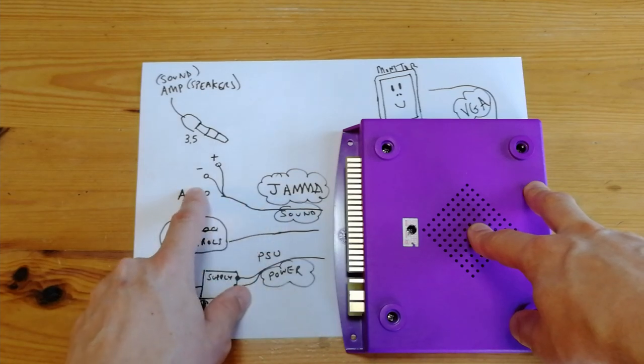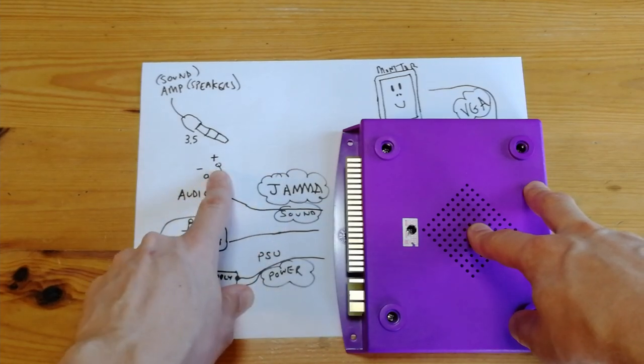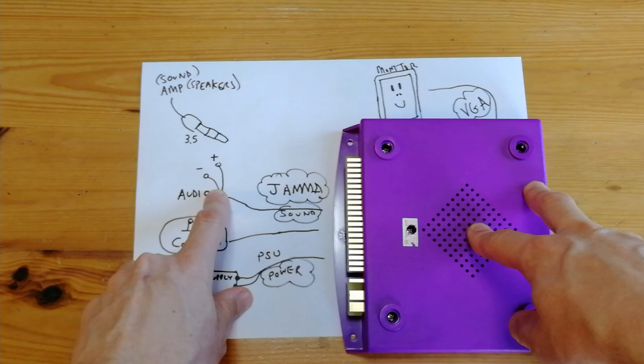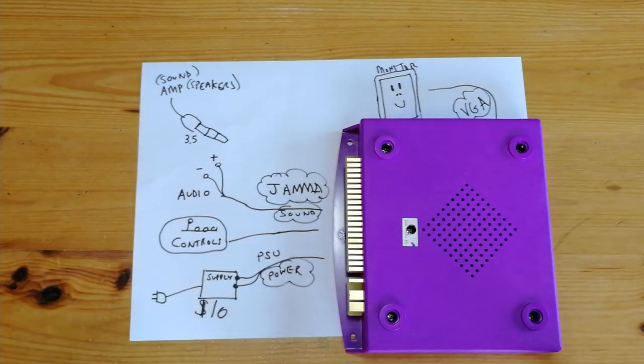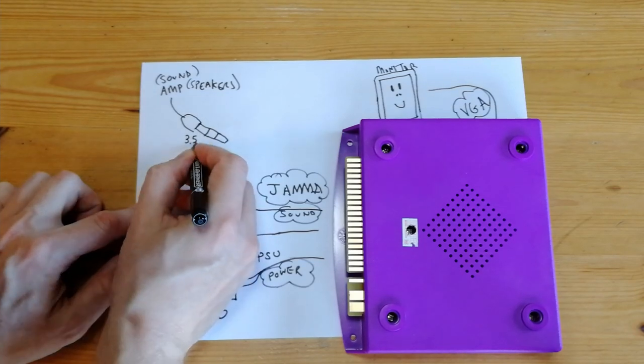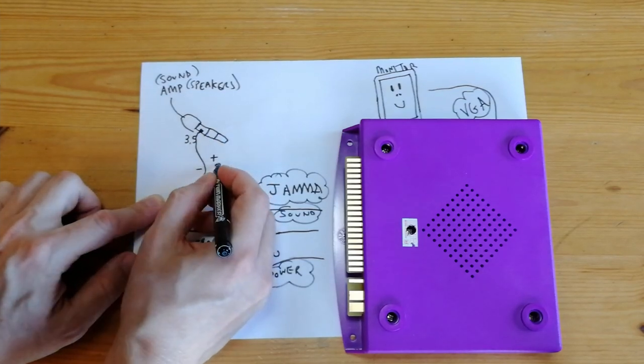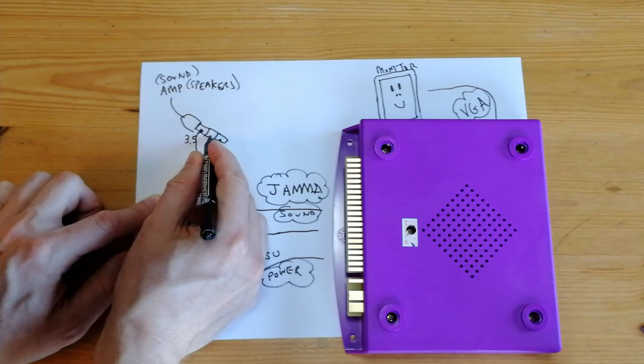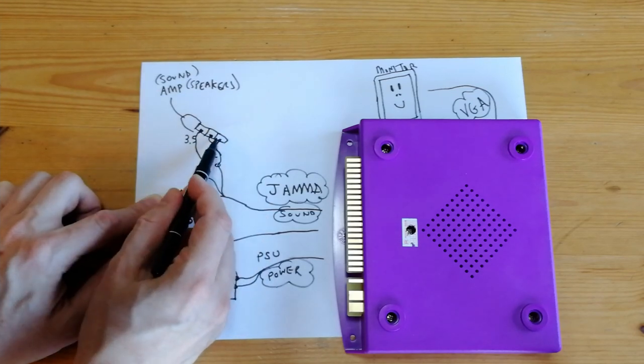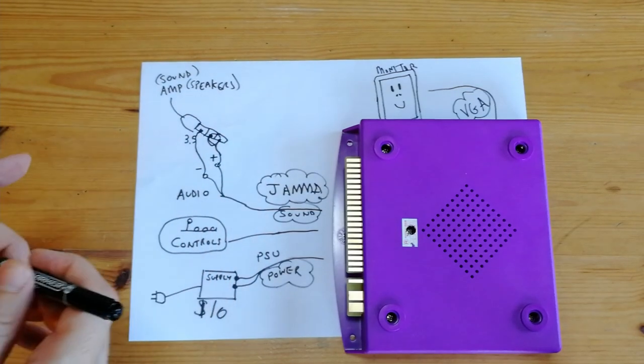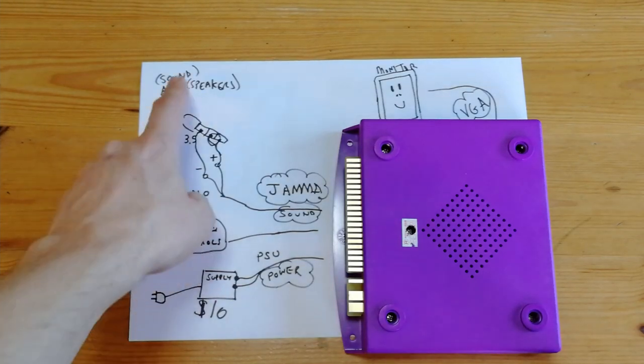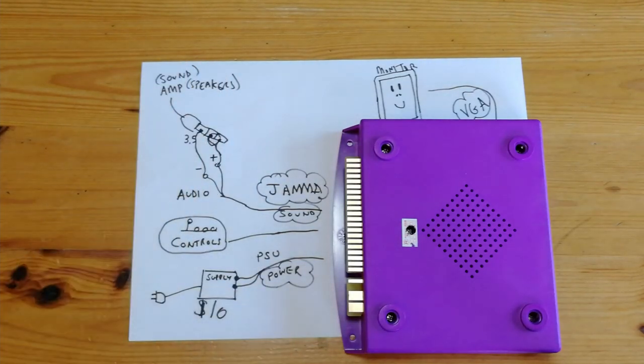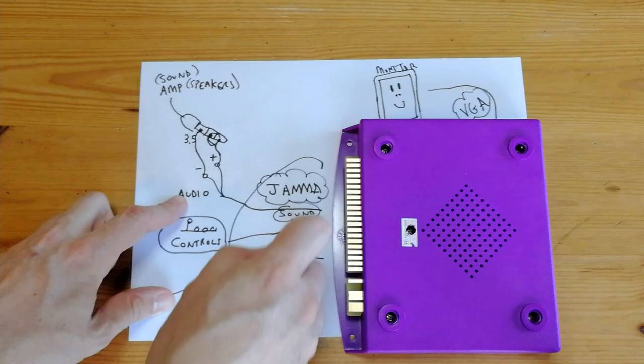The sound will also come from the jammer edge. Traditionally, jammer edge only has mono sound, giving us two cables, having one as ground and one as audio signal. Some may give us left and right, but I'm just going to hook this up to here, and then hook plus up to here and here. The top two pins of this speaker jack are for left and right audio, and the bottom is for ground. That's going to go to the amp, and I'll have left and right speakers working as mono.